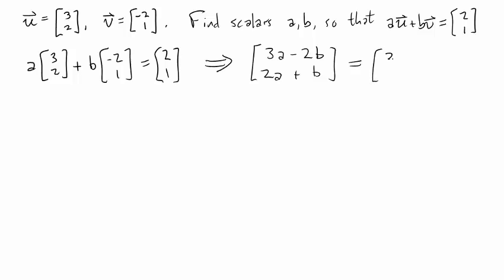And we're wondering, are there numbers a and b so that this vector is equal to this vector? Well, the only way those two vectors can be the same is if the first components are equal and the second components are equal. So that's going to give us two equations that a and b have to satisfy. Those equations are 3a minus 2b equals 2, and 2a plus b is equal to 1.